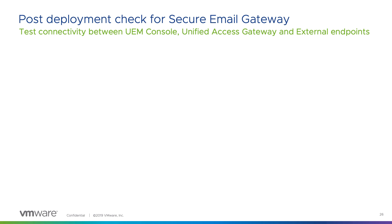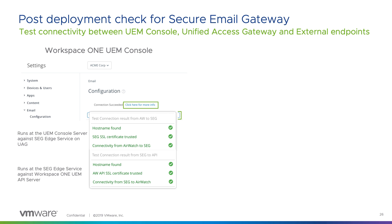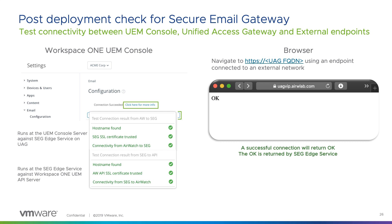After deploying Unified Access Gateway with Secure Email Gateway configured, there are tools to test connectivity and verify services are running. Start with the Workspace ONE UEM console: go to the email configuration you added and use the Test Connection button. It will check certificates on the appliance and validate the API SSL certificate. During that test, you'll see communication tests between Workspace ONE UEM and Secure Email Gateway, as well as between Secure Email Gateway and the UEM API server. You can also test by navigating in a browser to the Unified Access Gateway FQDN from an endpoint on an external network — receiving an OK response confirms the SEG edge service is responding.